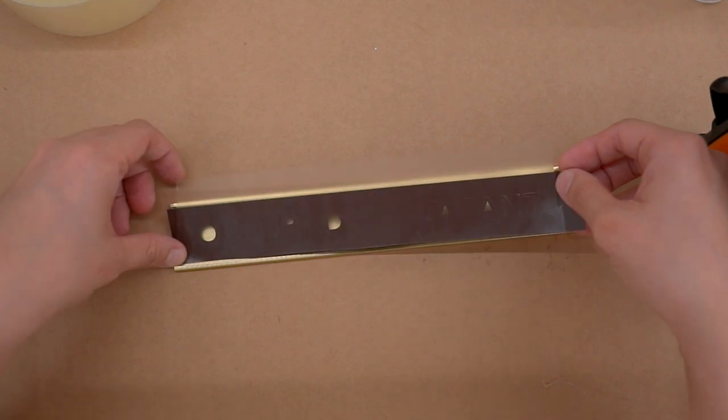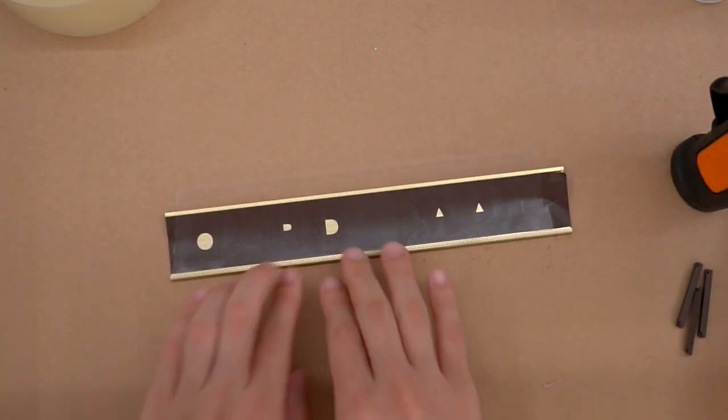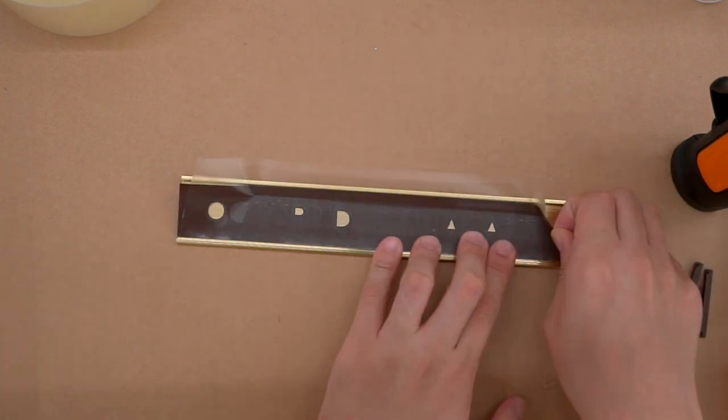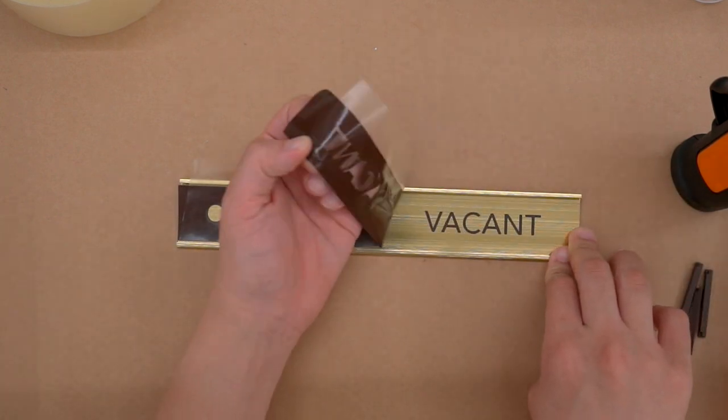Using my Cricut cutter, I cut out the text. What I like to do is cut out a box around it so that I know all my edges are aligned.